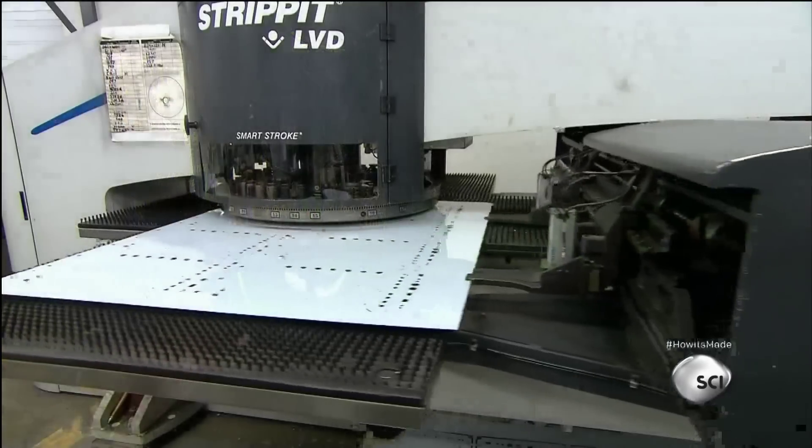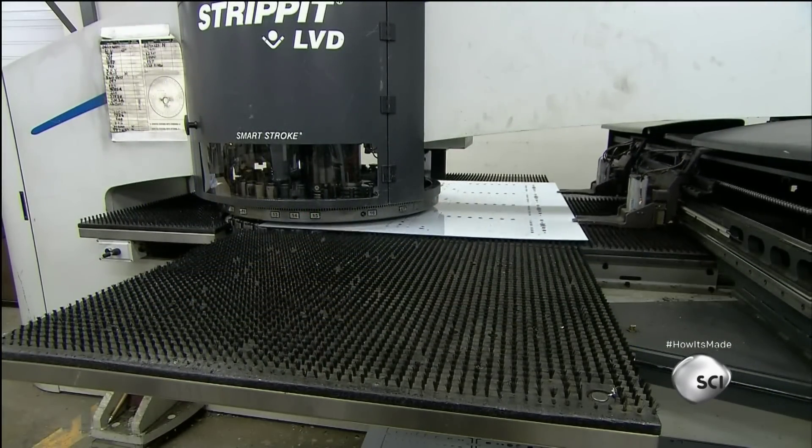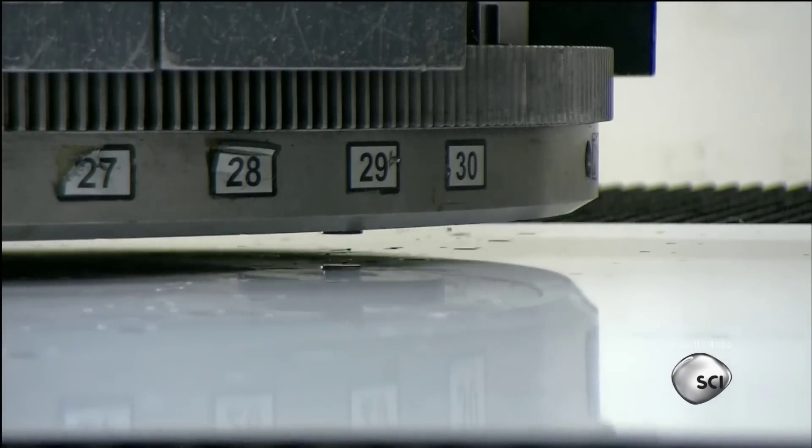This factory makes the amp's main chassis from a sheet of polished stainless steel. A computer-guided punch press cuts openings for the power switches, control knobs, and other components.